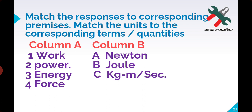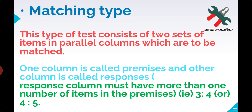For example, in column A you may have premises with 4 options, and in column B you have more response options — like work, power, energy, force. So the units: work unit is joule, power unit is watt, energy is joule, and force is Newton or kg meter per second squared. The response column must always have more items than the premises column.